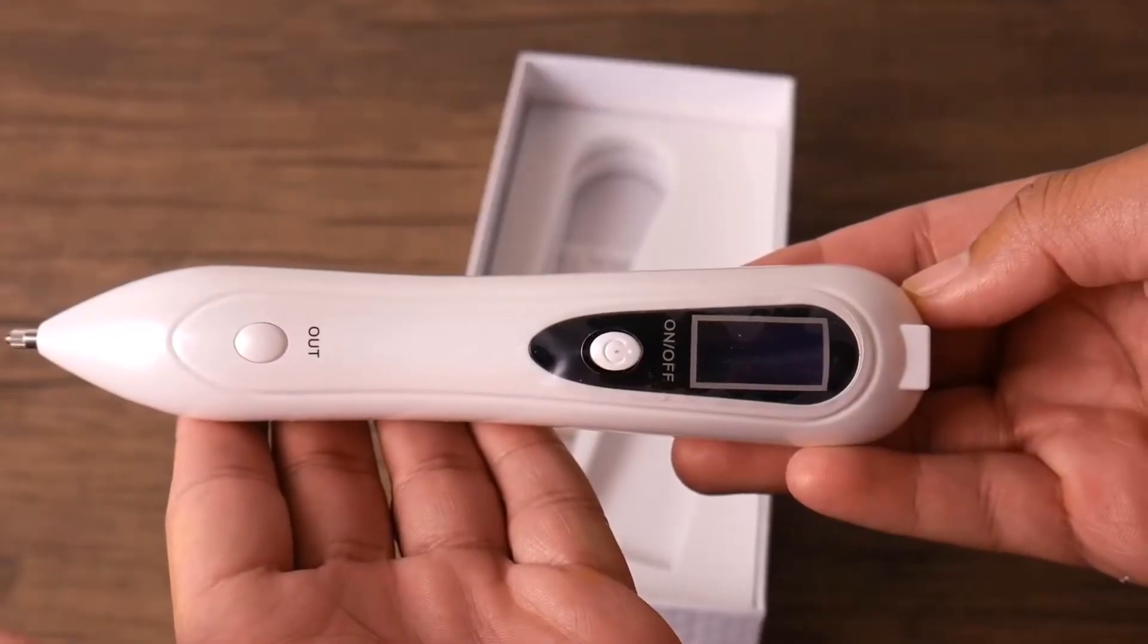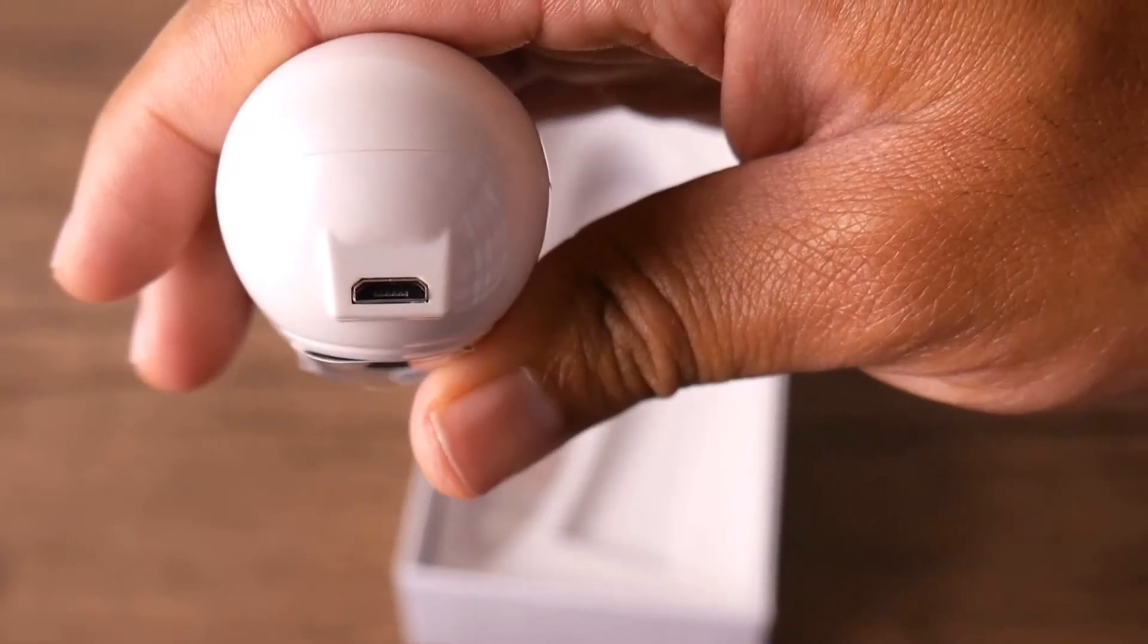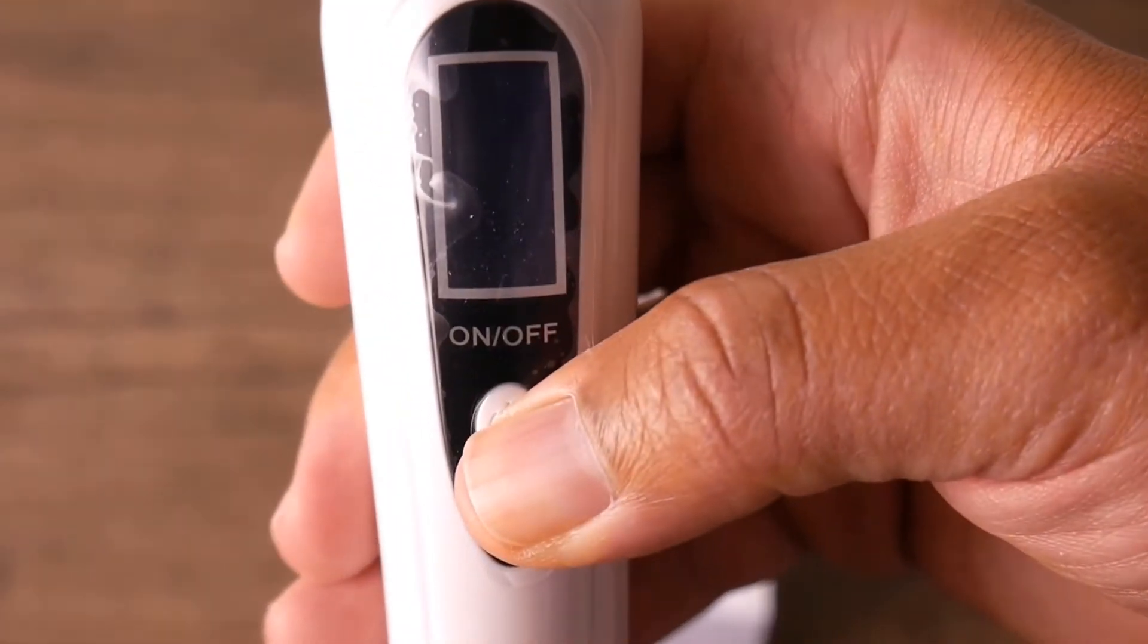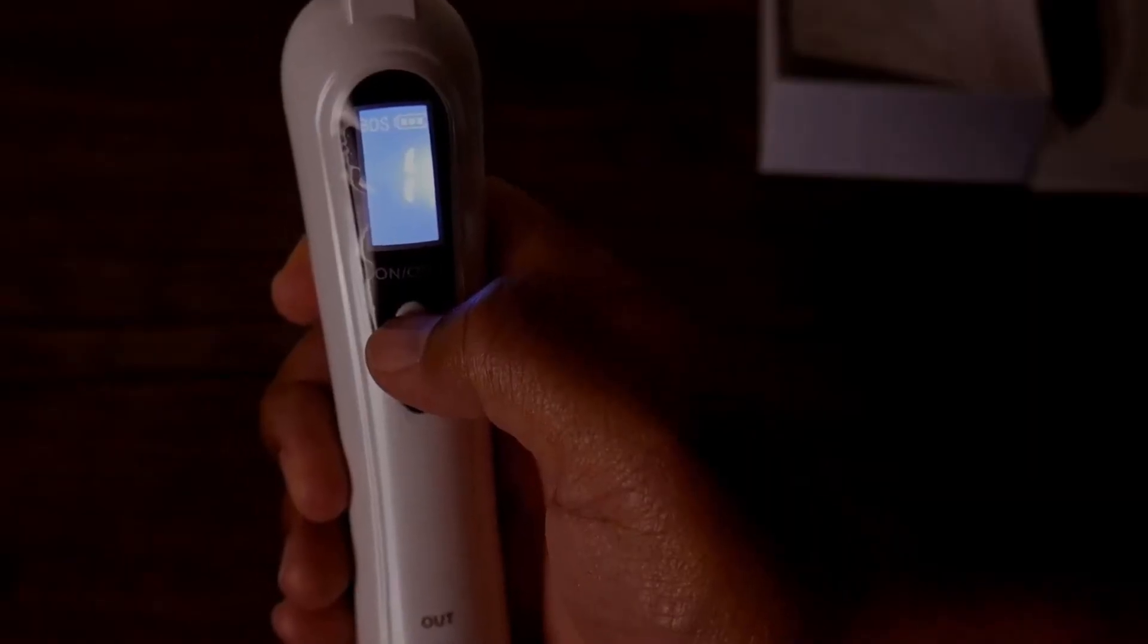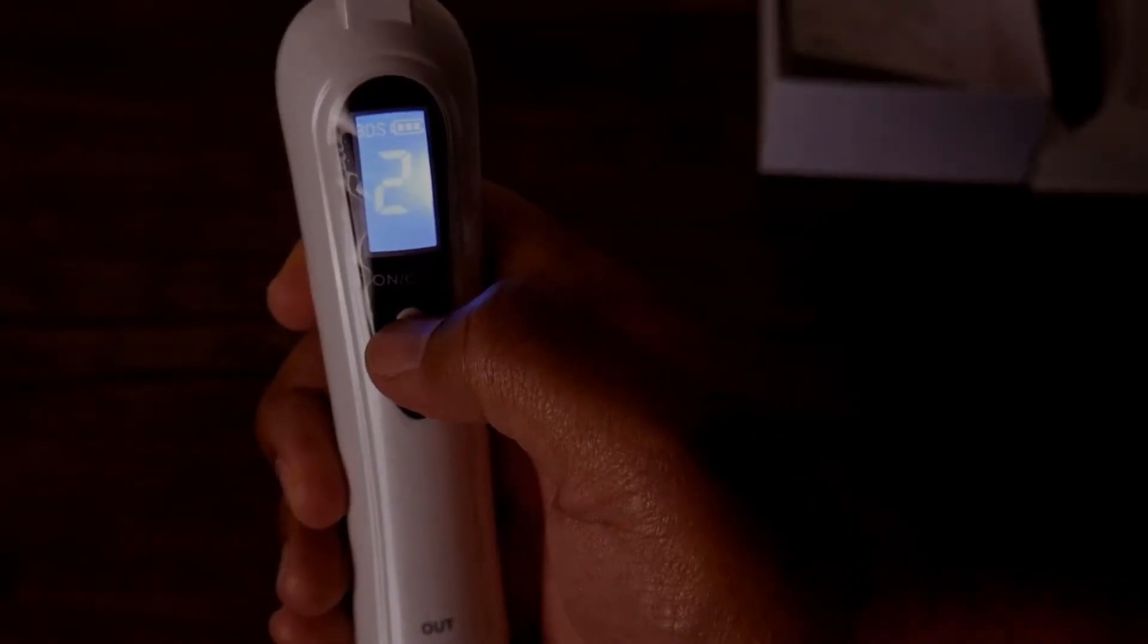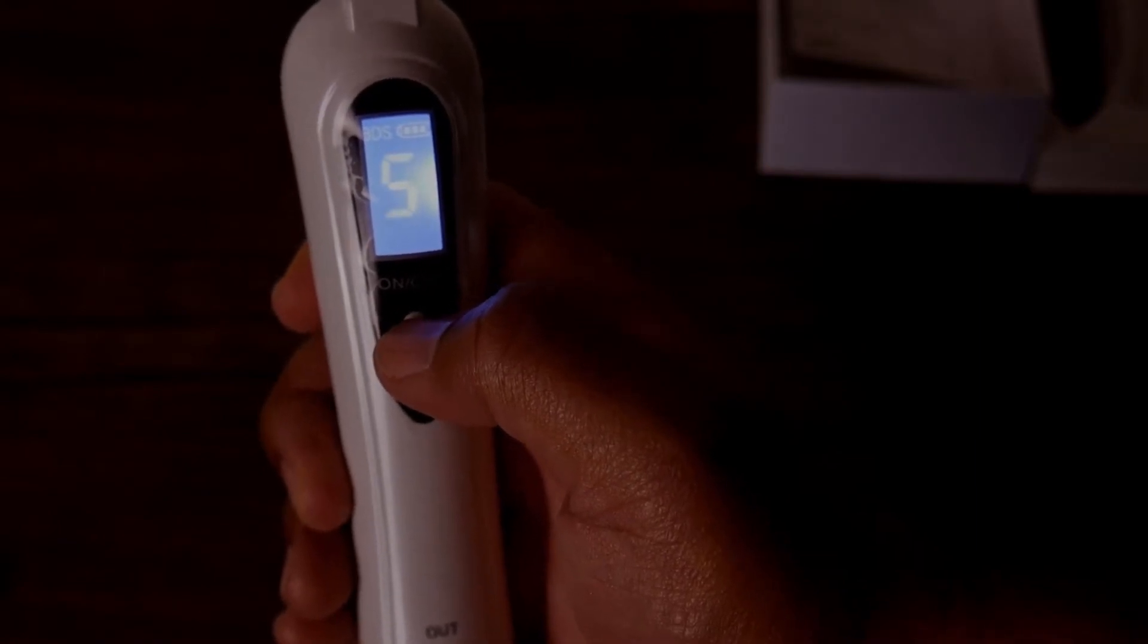As you can see, the design of your skin remover is very nice. It is made out of high-quality materials. It has an easy-to-read LCD display, and it has 9 different levels of intensity that you can adjust to fit your needs and address the skin issues that you're having.